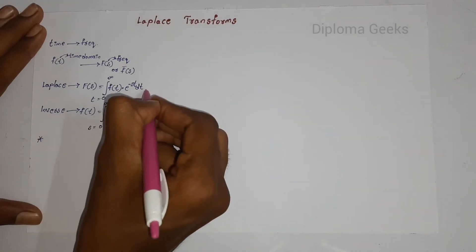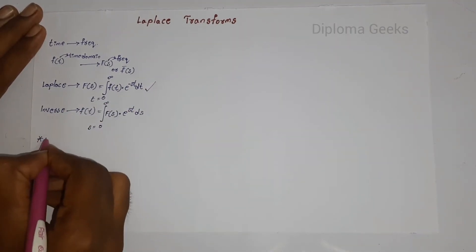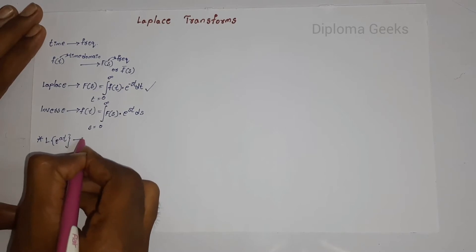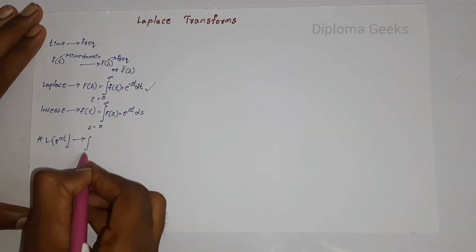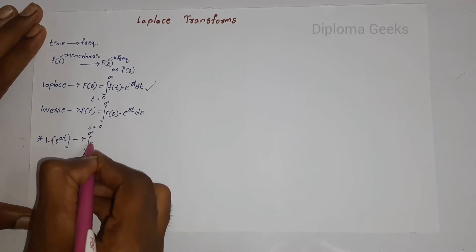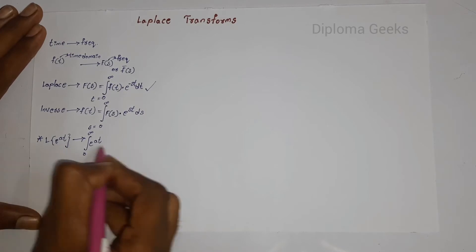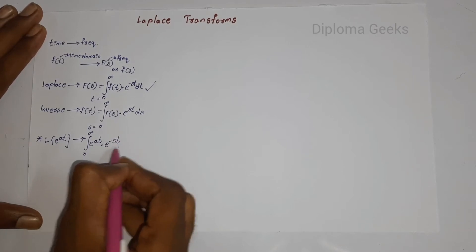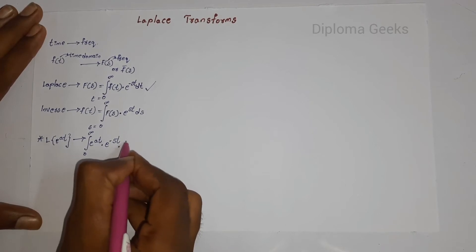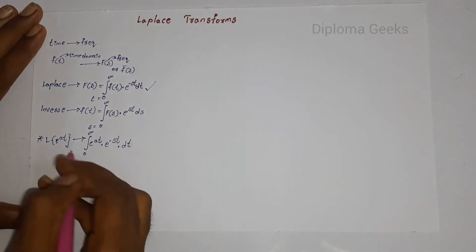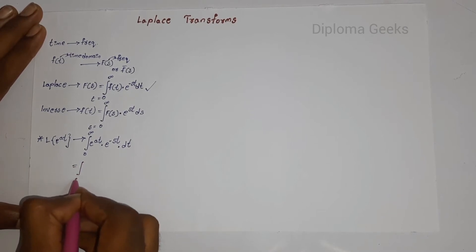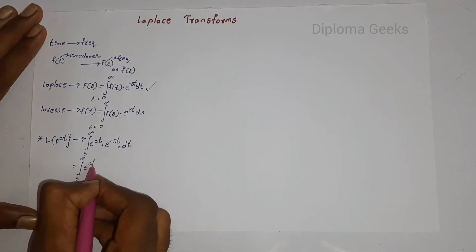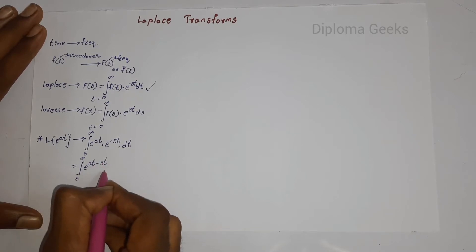As per this formula, the Laplace transform basic formulas: let us find the Laplace transform of e to the power of at. Applying the formula, integration with limits 0 to infinity of f(t) — which is e to the power of at — multiplied by e to the power of minus st, with respect to dt. It becomes integration from 0 to infinity of e to the power of (a minus s) times t, dt.